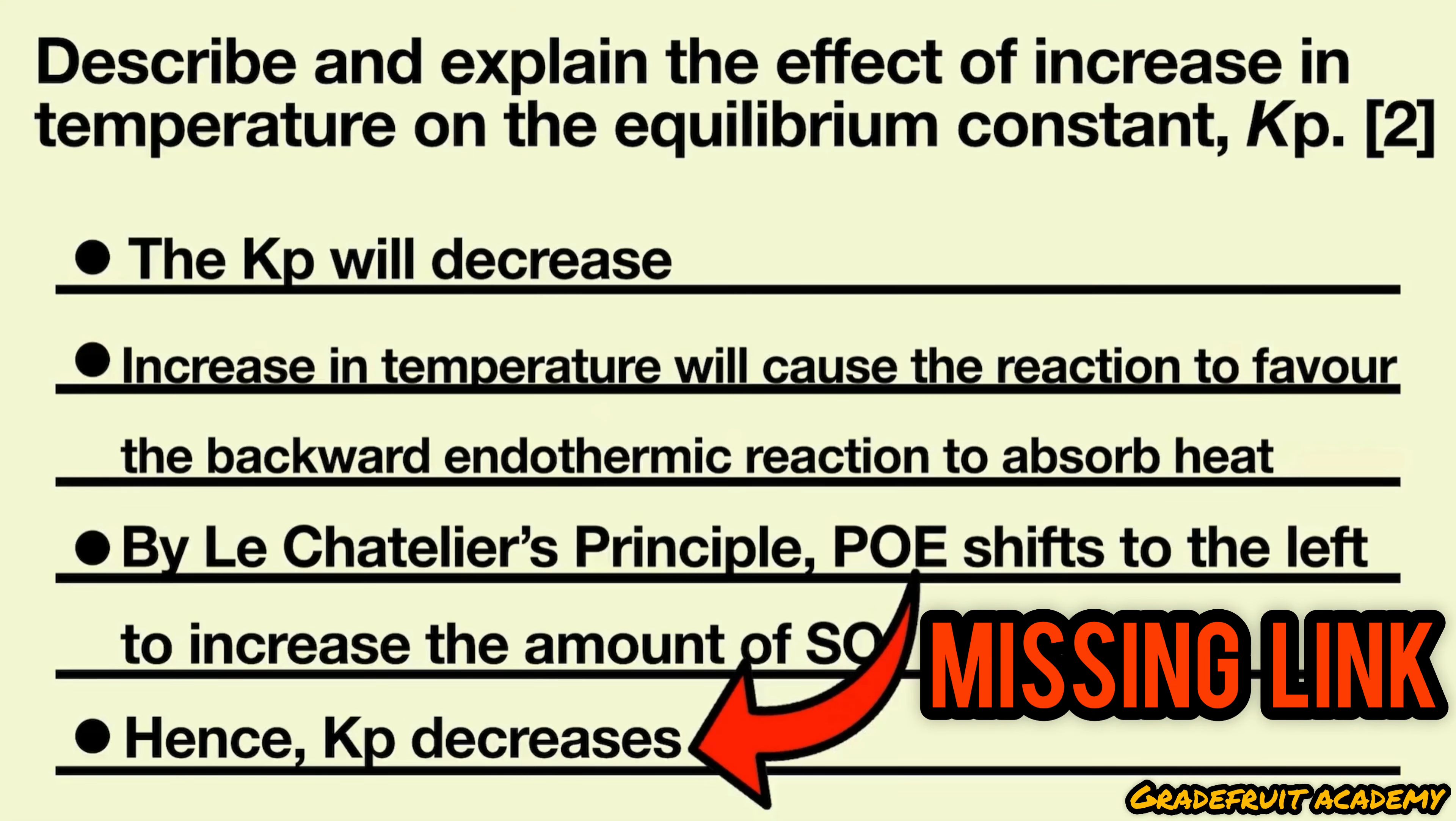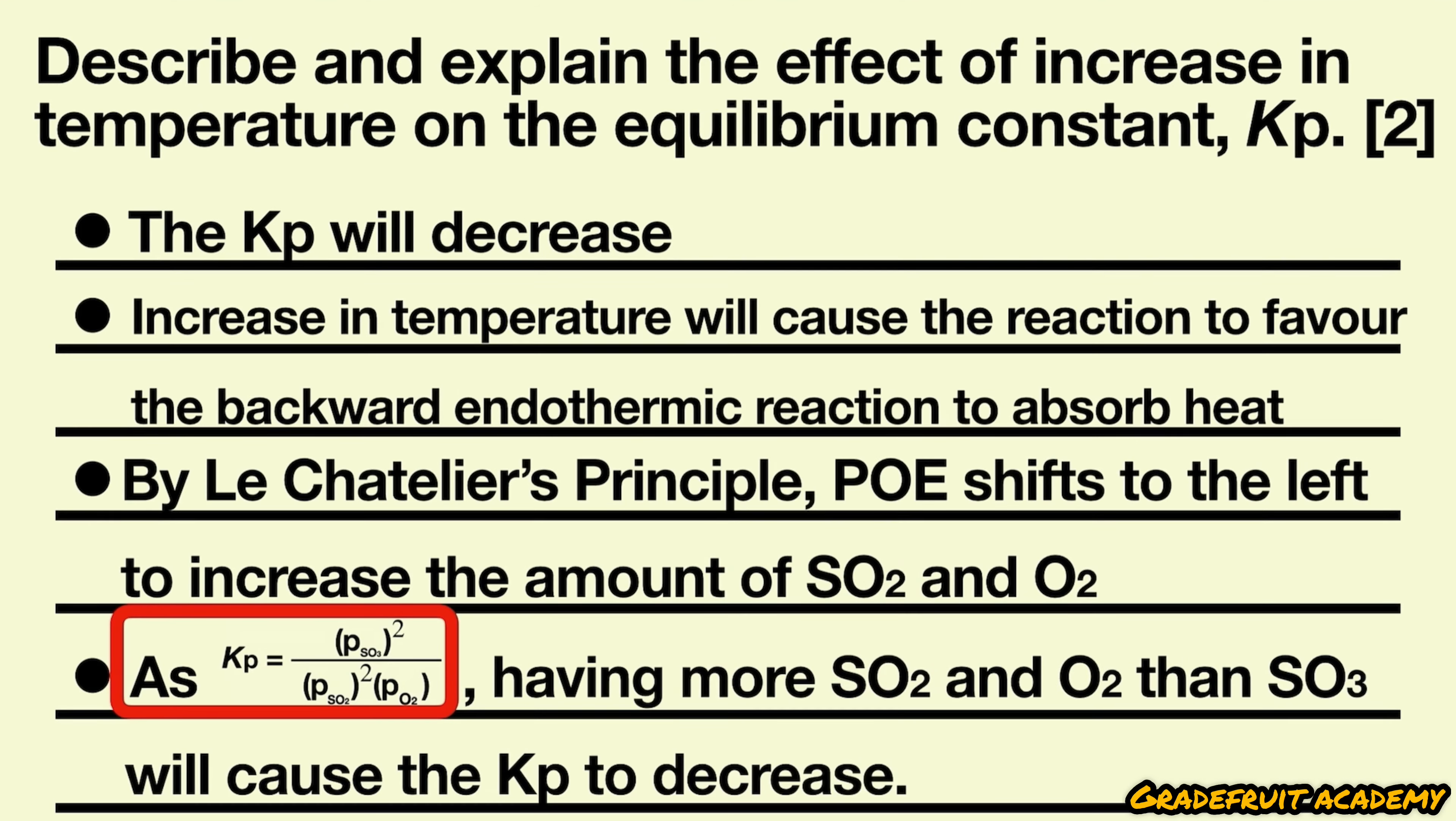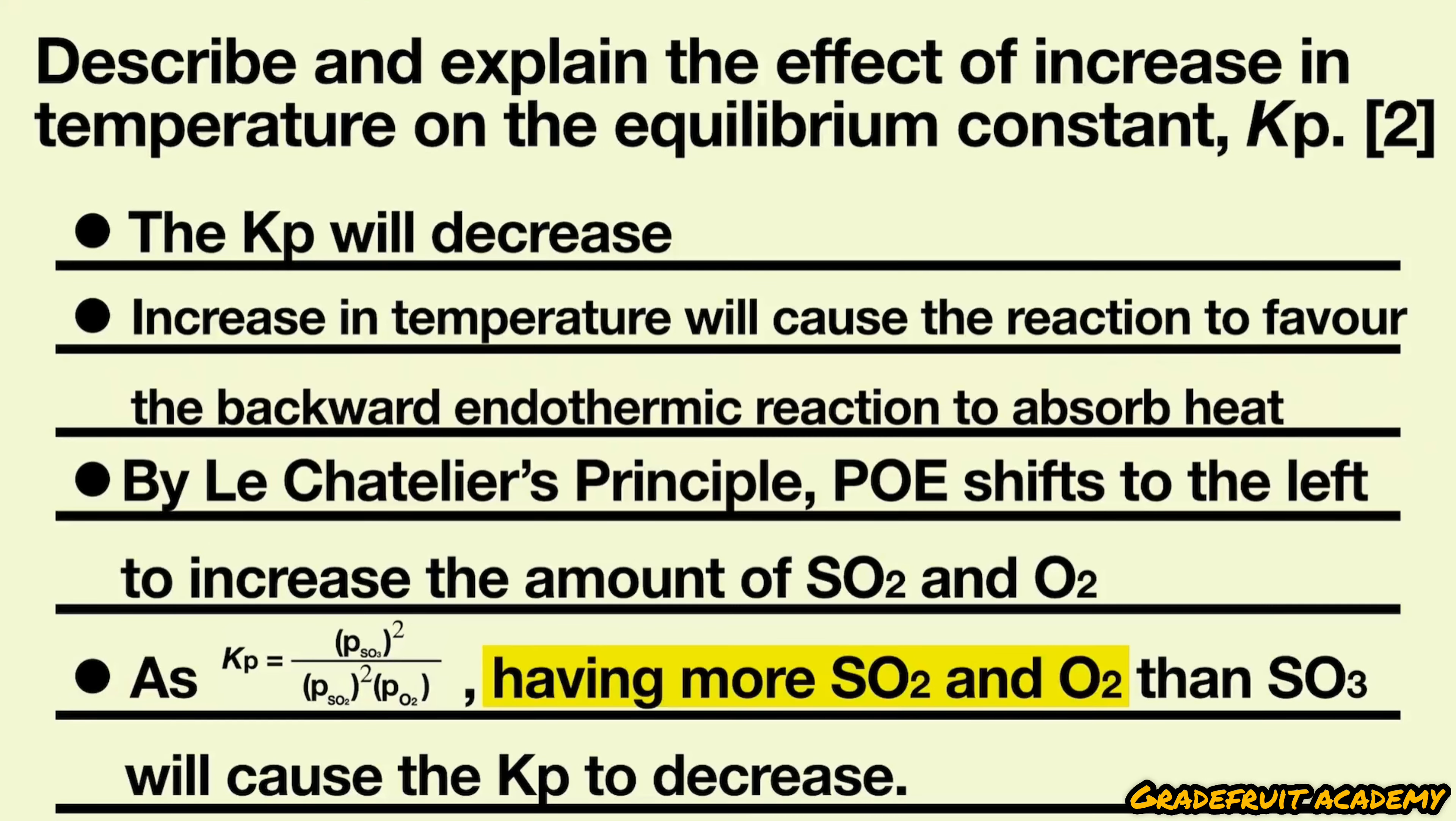However, there is still a missing link between the POE shifting to the left and the Kp decreasing. There is no direct correlation if you think about it. So since we are talking about Kp, we should write in the Kp expression, and with that, having more SO2 and O2 than SO3 will cause the Kp to decrease.